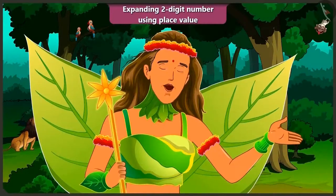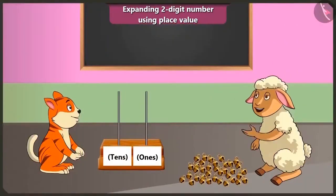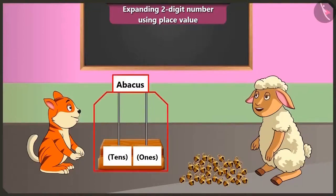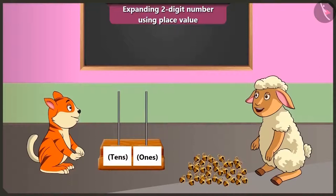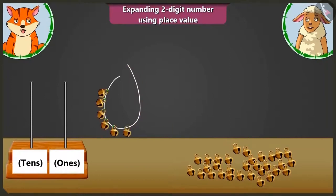Children, in this video, through some interesting examples, we will better understand expanding two-digit numbers using place value and writing in the boxes of tens and ones. Billy, here are some anklet beads. Can you count them and tell me how many beads to put in the tens and ones boxes of this abacus? Yes, sure. Look, Lily — first I will make groups of ten with the anklet beads. One, two, three, four, five, six, seven, eight, nine, and ten. I have made their group like this.